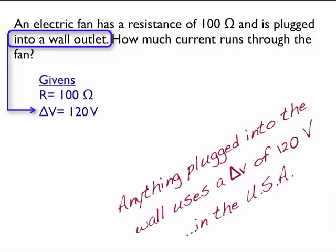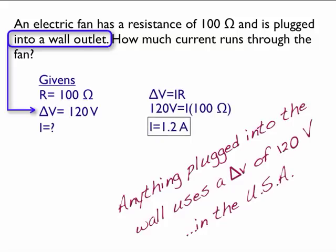And I'm looking for the current, which is the variable I. So I can use Ohm's law: V equals IR. Write the formula, plug in the numbers and units, and there's my answer.